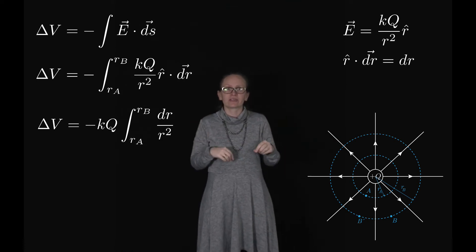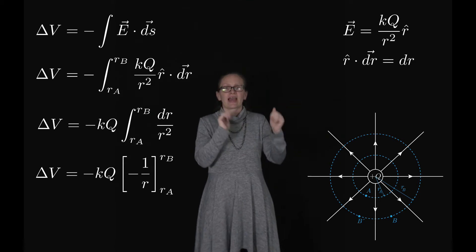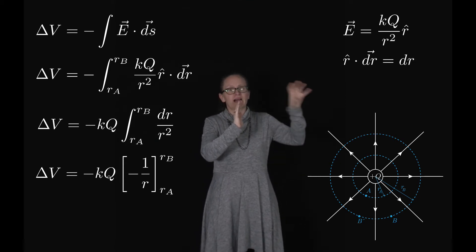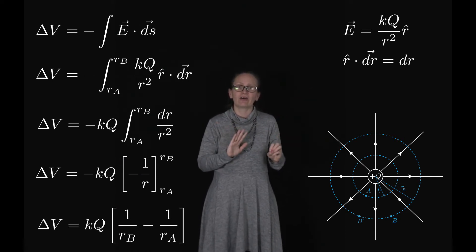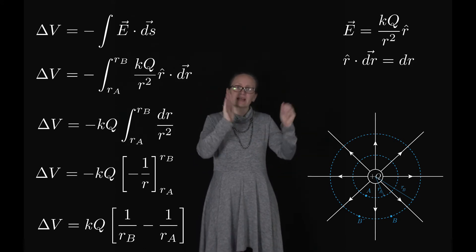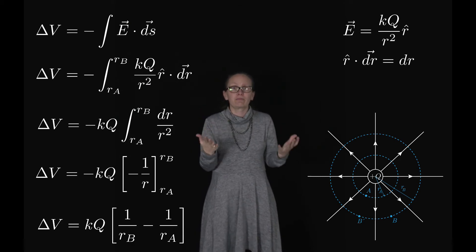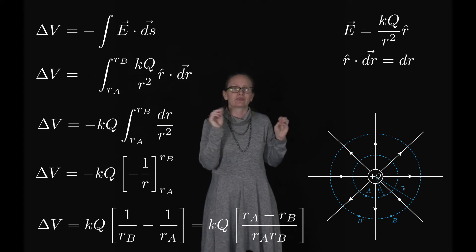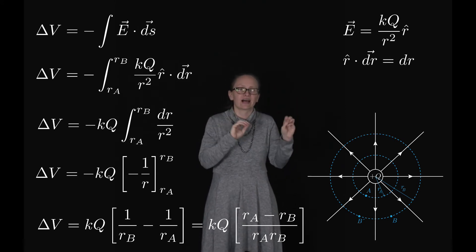Evaluating the integral gives -KQ times [-1/R] from RA to RB. Substituting the limits, the negative signs cancel, and we obtain ΔV = KQ(1/RB - 1/RA). This can also be rearranged as KQ(RA - RB)/(RA·RB).